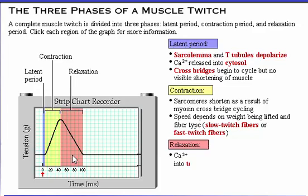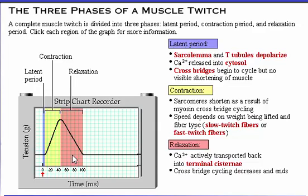During the period of relaxation, the level of calcium ions in the cytosol rapidly decreases as calcium ions are actively transported back into the terminal cisternae. Due to the decrease in calcium, cross bridge cycling decreases and ends. Thus, tension is reduced, allowing the muscle to return to its original length.